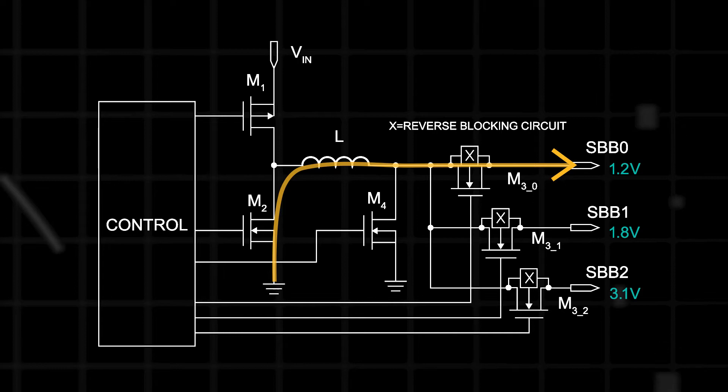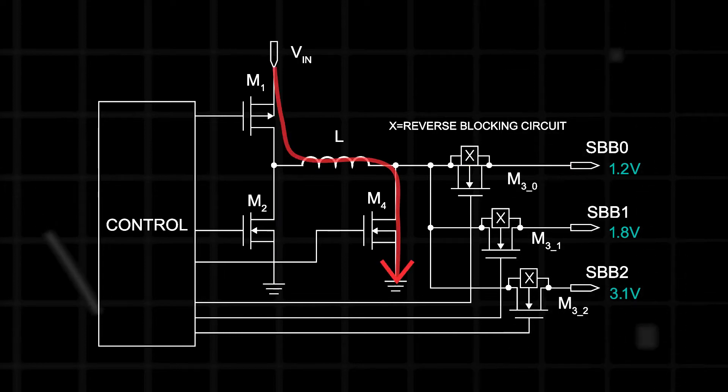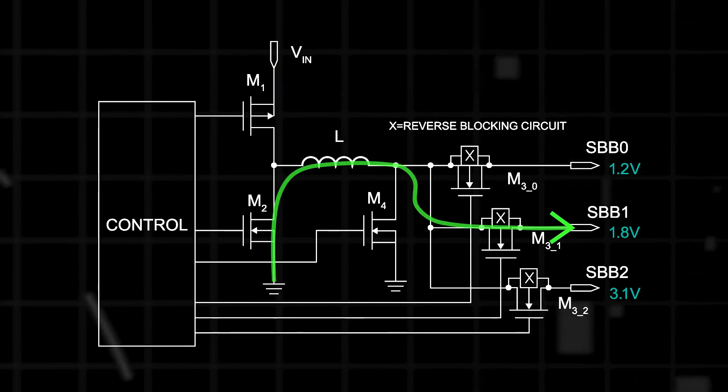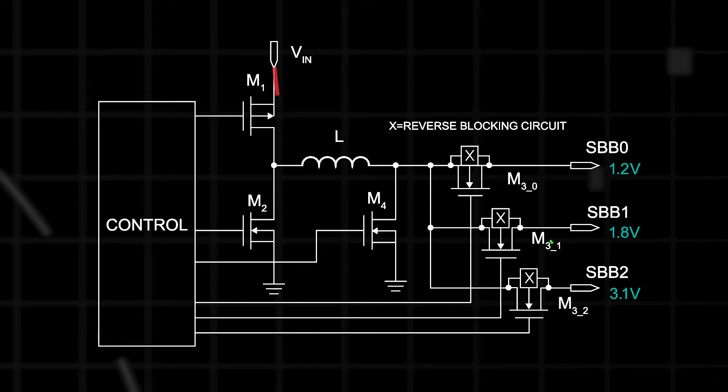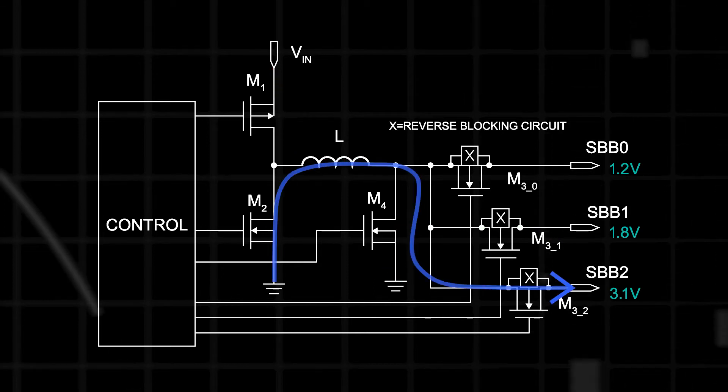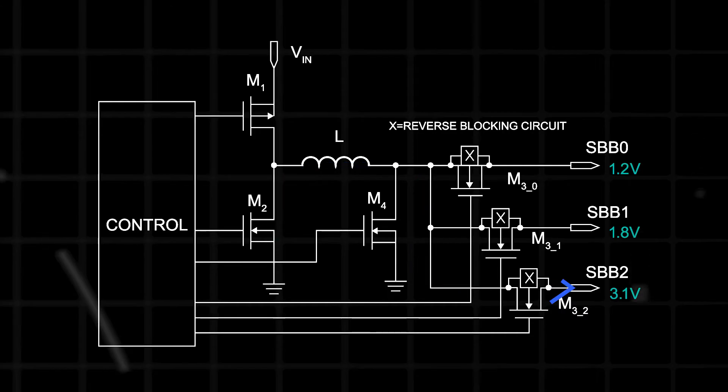It also allows the regulators to share the saturation current rating of the inductor, as the outputs are time multiplexed to offset peak current flow, reducing the required saturation current rating and minimizing the size of the inductor.